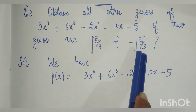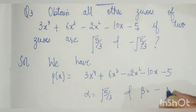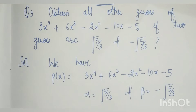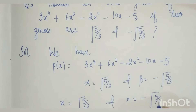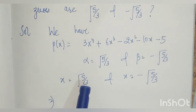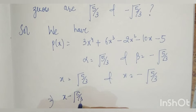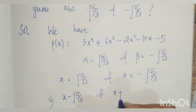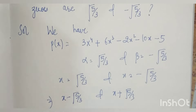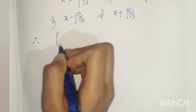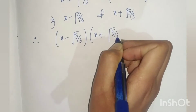We will take these two zeros given to us. We will take alpha equal to √(5/3) and beta equal to -√(5/3). We know x = √(5/3) and x = -√(5/3), which gives us (x - √(5/3)) and (x + √(5/3)).